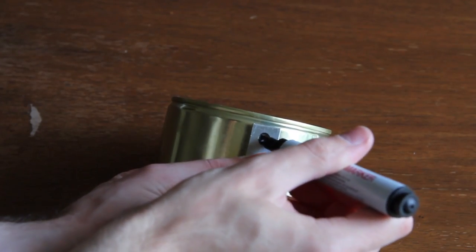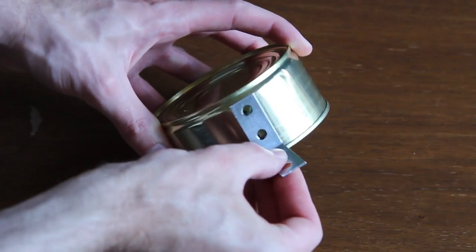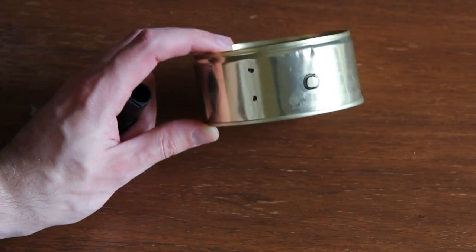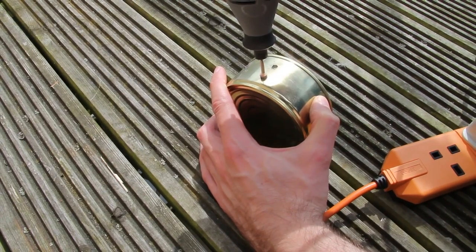Mark the position of the holes. We need two holes for the angles and one for the guitar jack. Drill the holes and remove the edges.